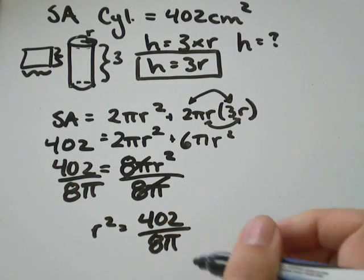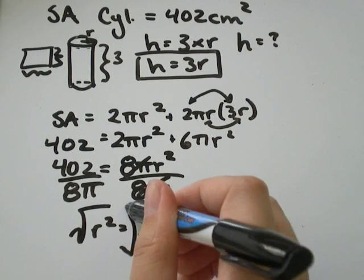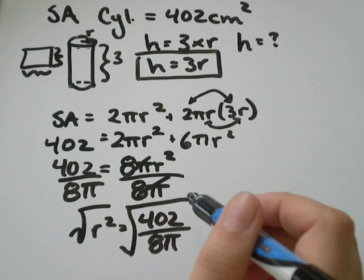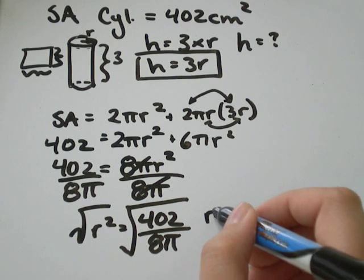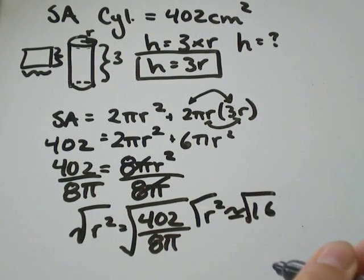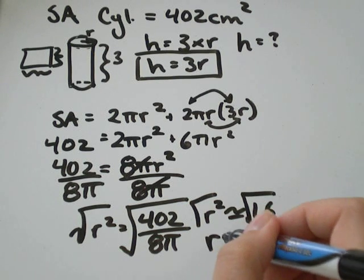To get r by itself, just take the square root of both sides. So 402 divided by 8π, I guess that's equal to approximately 16. So the square root of r² would be equal to r. And the square root of 16 would be equal to 4.